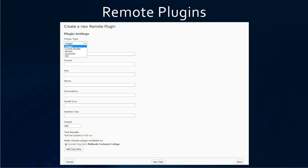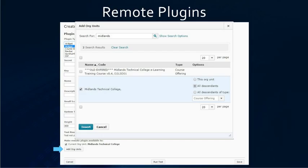From the drop down, you will normally be creating a widget or a course builder link. After you fill in all of the fields, you want to click on add org units. Then search for your main my home org, check the box for it, and then choose all descendants. This makes sure that every course shell in D2L can access this remote plugin link.